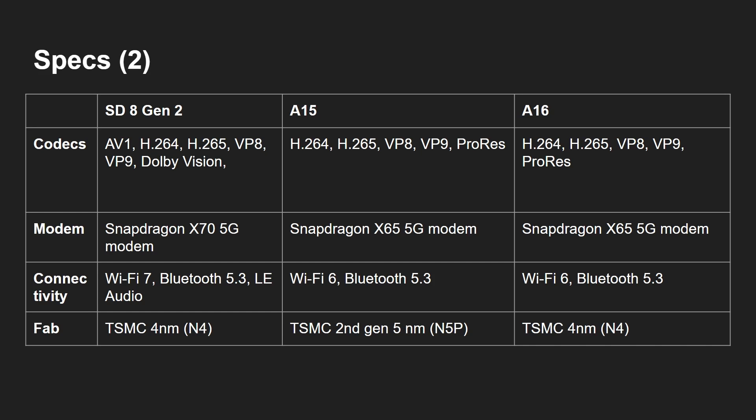For manufacturing process, the A16 and Snapdragon 8 Gen 2 are both on TSMC 4 nanometer, so they're roughly on par. The A15 uses the second-generation 5 nanometer process, N5P.